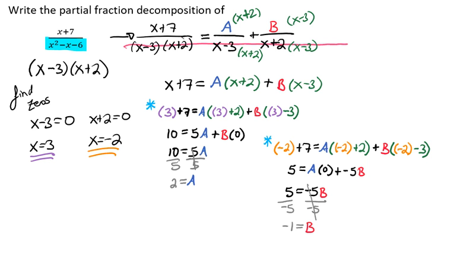So now we're able to write our final answer. Which is x plus 7 over x squared minus x minus 6 equals 2 divided by x minus 3 plus negative 1 divided by x plus 2. And we're finished.